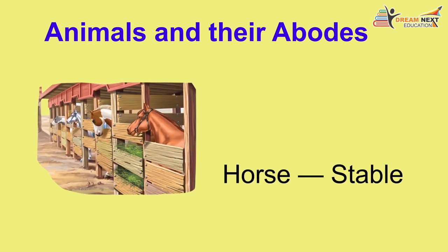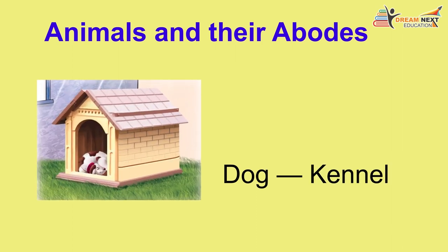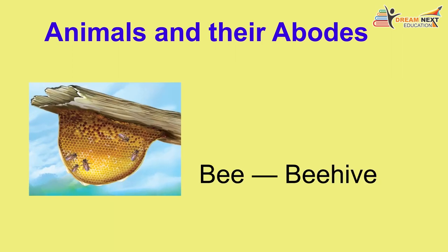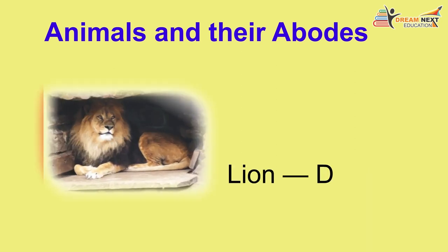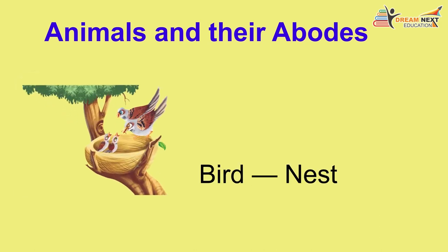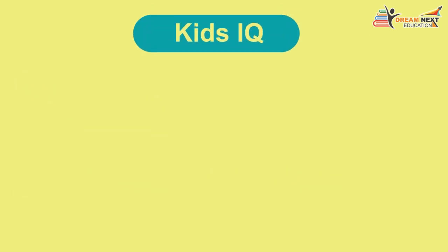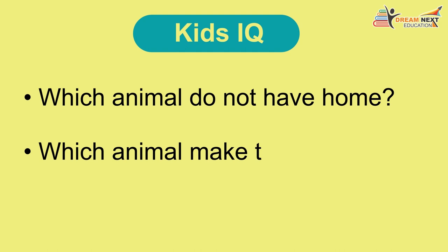Animals and their abodes: pig — sty, snake — hole, cow — shed, sheep — pen, horse — stable, hen — coop, dog — kennel, bee — hive, monkey — tree, lion — den, rabbit — burrow, bird — nest. Kids IQ: Which animal does not have a home? Which animal makes its own home?